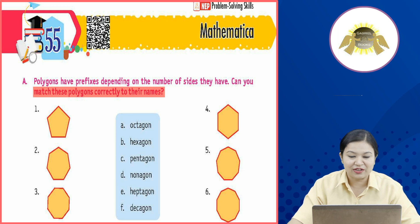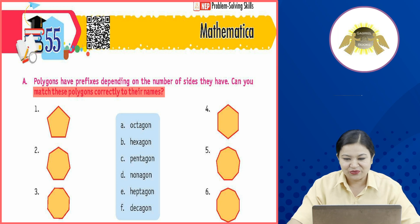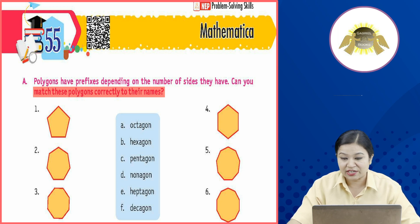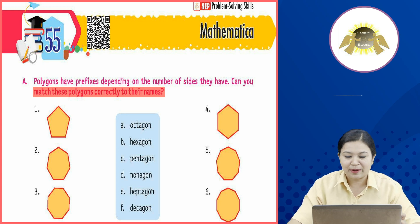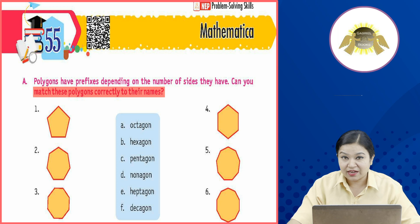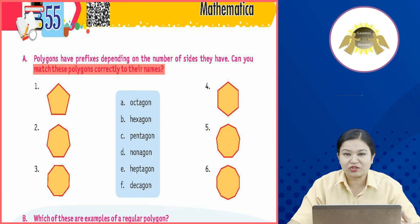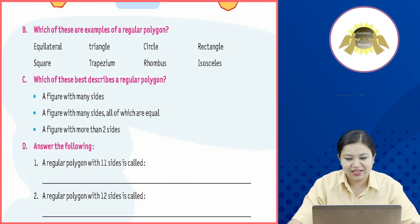Octagon has eight sides. Fourth is your hexagon — hexagon has six sides. Fifth is nonagon — match it with nonagon. Sixth is decagon, which has more than nine sides.